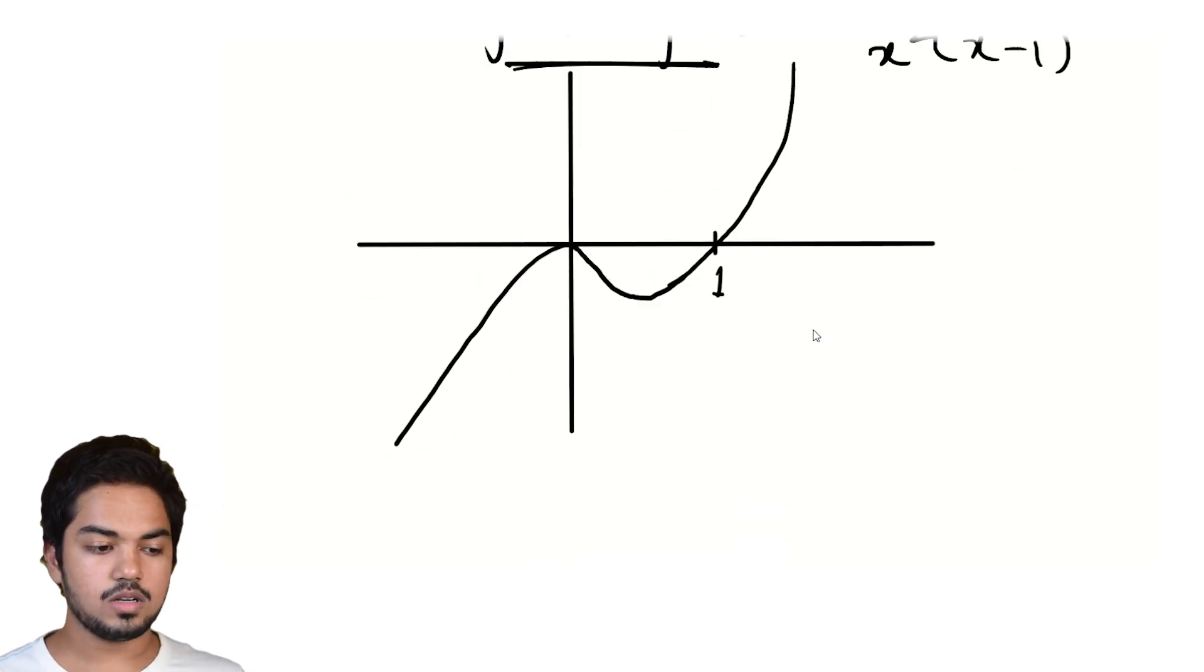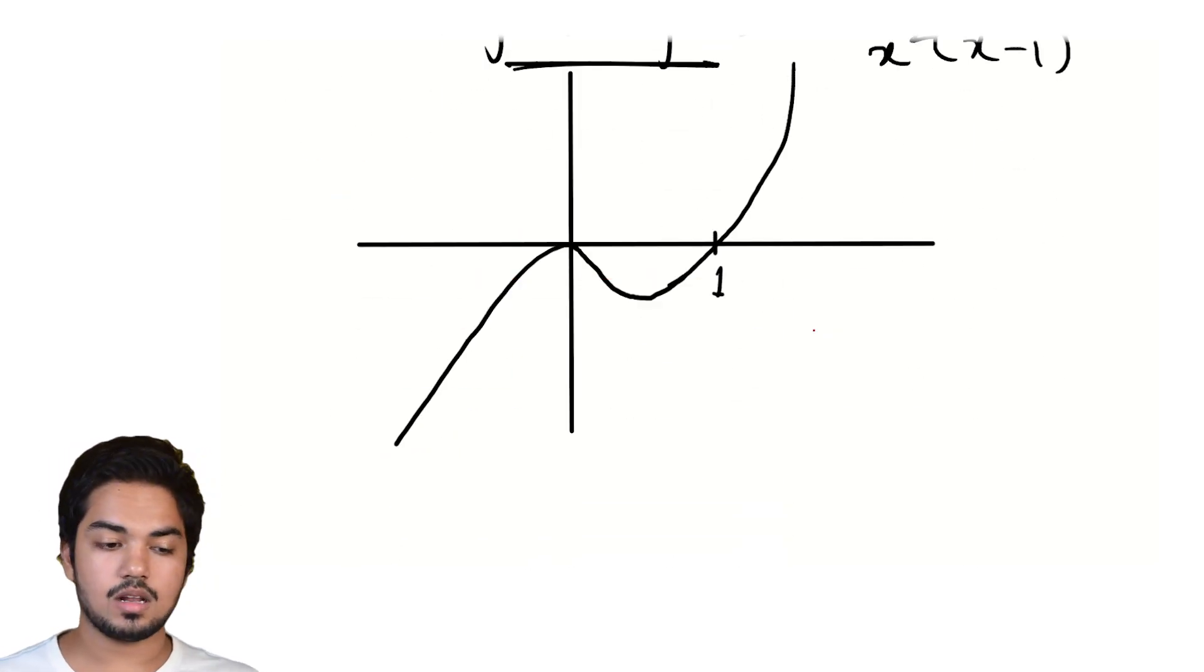But if you want the pair with the largest value, we're really just looking at this point. And so the two values, the two numbers R and S,